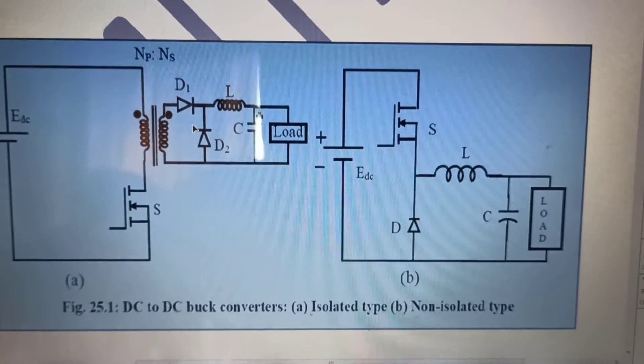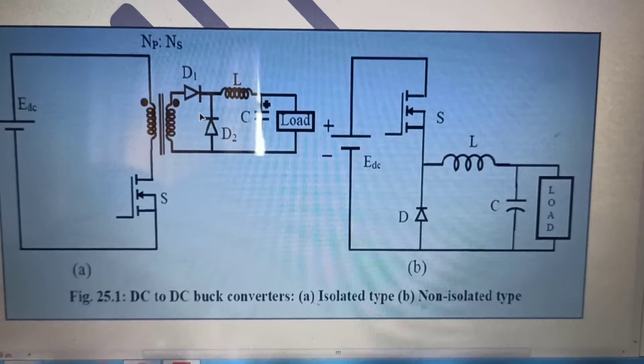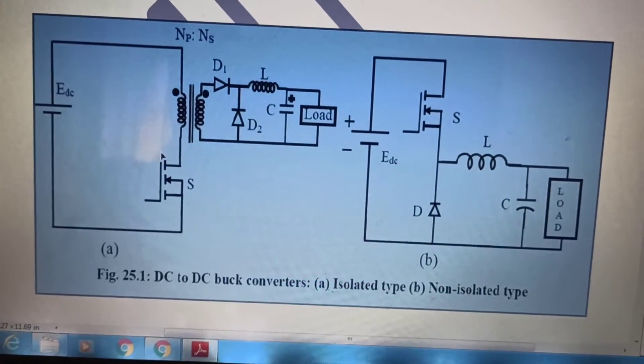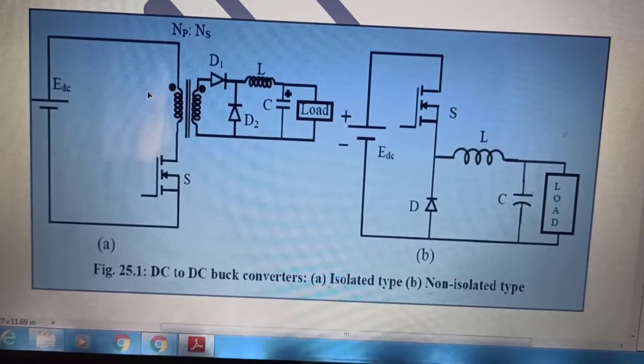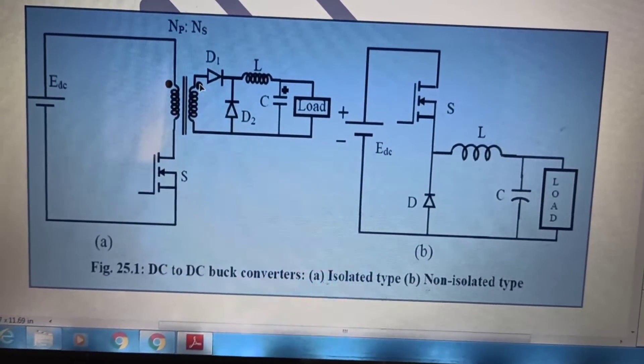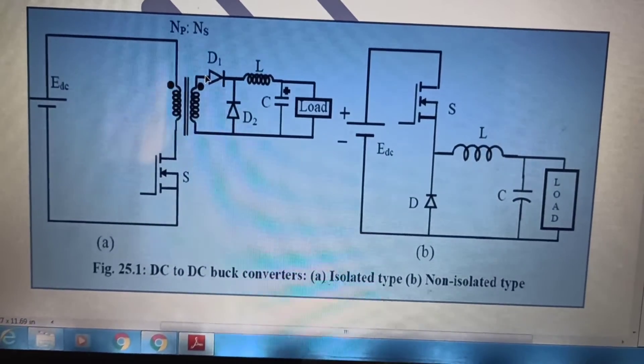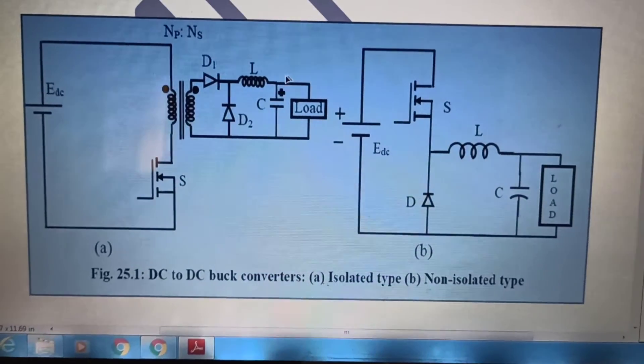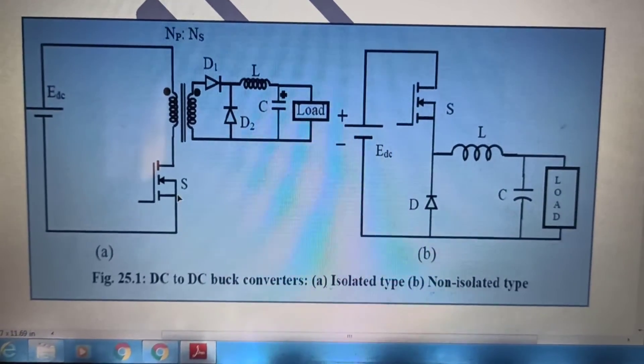So, that is the uncontrolled rectifier. Needless to say that when the circuit is closed, then obviously this point is positive. And this is also positive. So, a voltage will get applied. Diode will conduct. And the voltage gets applied across the load.